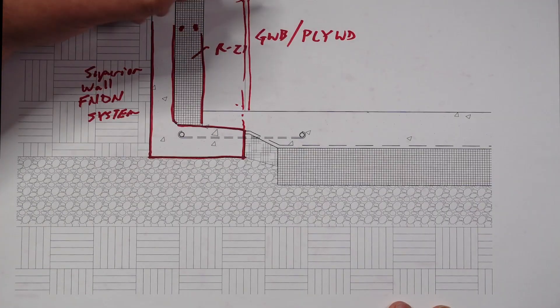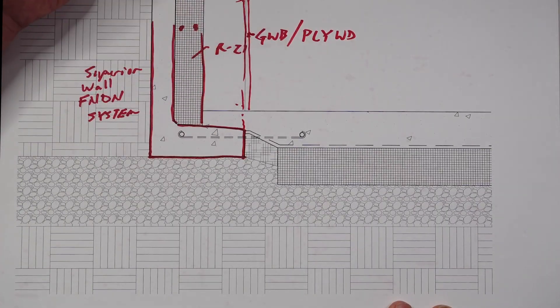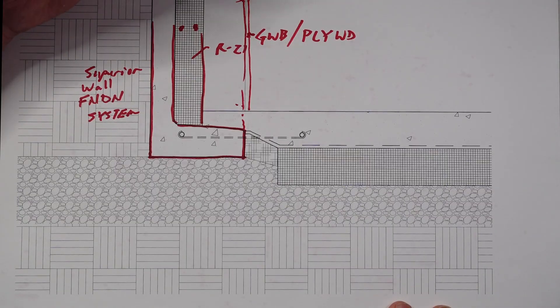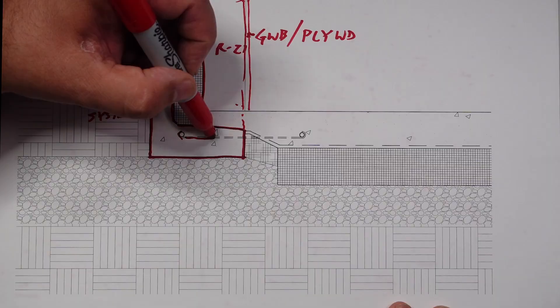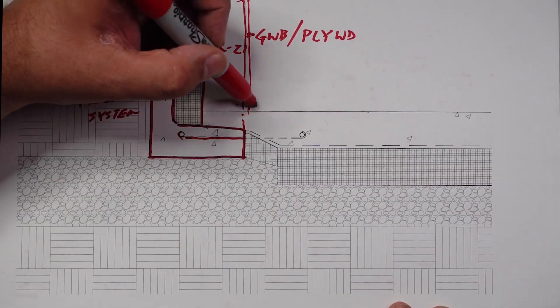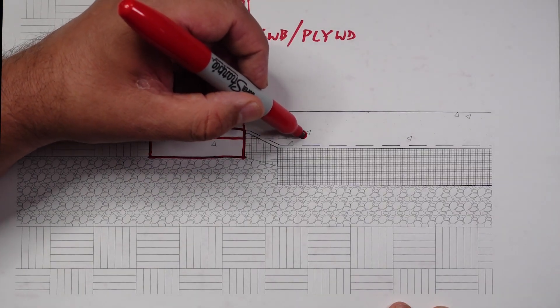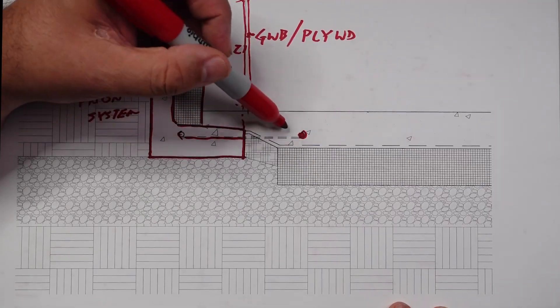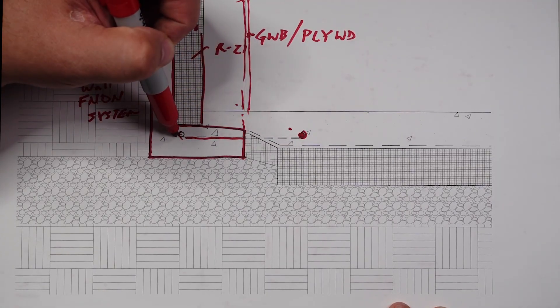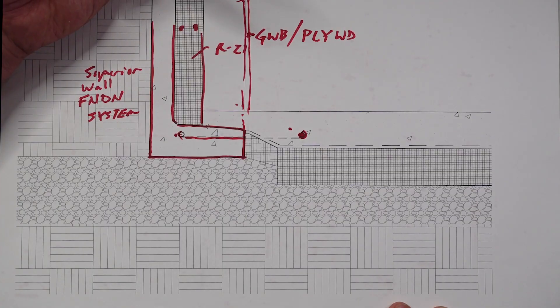So you can very quickly apply a gypsum wallboard or plywood, whatever you want to sheathe your workshop in, and you could simply apply that. Now a couple things that Superior Wall does: they have this wire in here that comes and it comes bent up. You lay it down and it basically becomes a holder for the reinforcing.